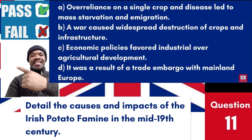Question 11: Detail the causes and impacts of the Irish potato famine in the mid-19th century. a. Over-reliance on a single crop and disease led to mass starvation and emigration. b. A war caused widespread destruction of crops and infrastructure. c. Economic policies favoured industrial over agricultural development. d. It was a result of a trade embargo with mainland Europe. Answer: a. Over-reliance on a single crop and disease led to mass starvation and emigration. The Irish potato famine was caused by a potato disease that devastated the crop, which was a staple food in Ireland, leading to mass starvation, death and emigration.